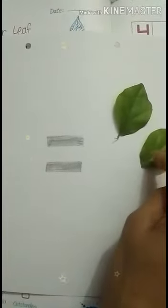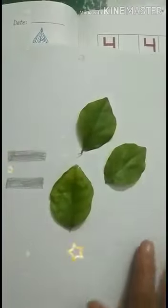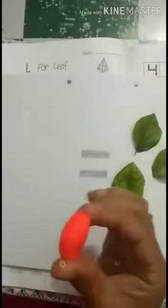Leaf starts with the alphabet L. This is a leaf. This is a leaf. And this is a leaf. Today we will learn about L. You will learn about L. This is a leaf.